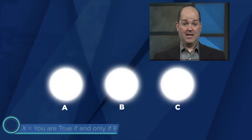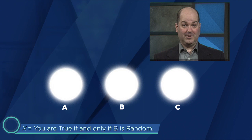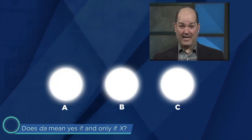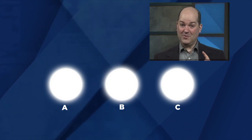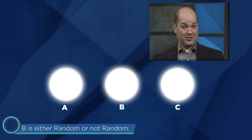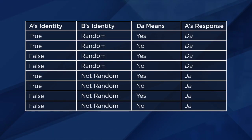So all that's left is to find a first question that definitively identifies one god as not random — it's actually this step that causes most of the complexity. For this purpose, Boolos came up with this: we'll let X be the assertion 'you are True if and only if B is random,' and we now ask A, 'Does da mean yes if and only if X?' In other words, 'Does da mean yes if and only if you are True if and only if B is random?' If you care to work through the logic, you'll find that there are many cases to consider — A is either True, False, or Random; B is either random or not random; and da means either yes or no. To simplify, let's assume A is not random. Surveying the cases, if A is not random, then an answer of da means that B is random, and an answer of ja means that B is not random. Either way, we've identified someone who is definitely not random.